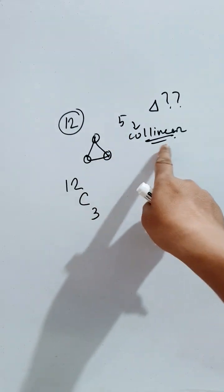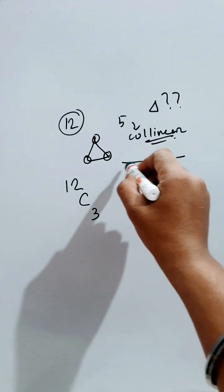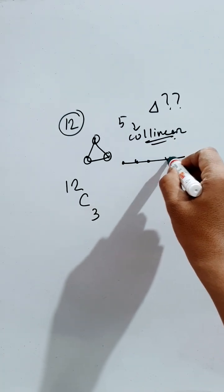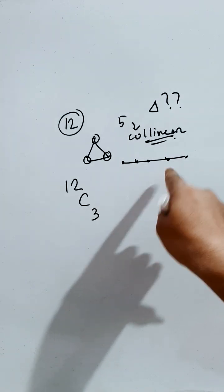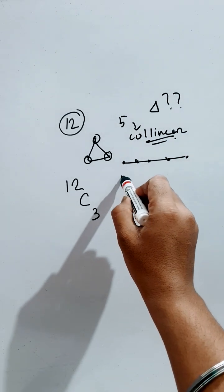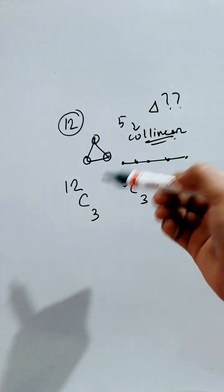But still there is a condition: 5 collinear points are there. So these 5 points are lying on a line. So if they are not collinear, then they will form 5C3 number of triangles.